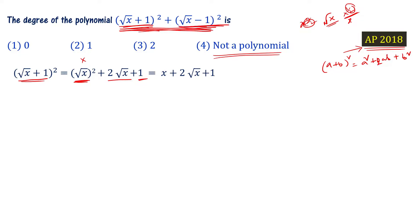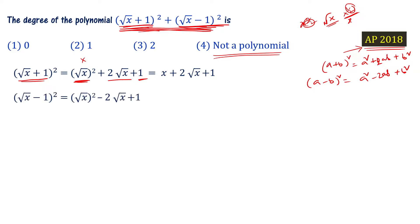Now expand (√x − 1)² using the formula (a − b)² = a² − 2ab + b². So (√x − 1)² = (√x)² − 2·√x·1 + 1² = x − 2√x + 1.